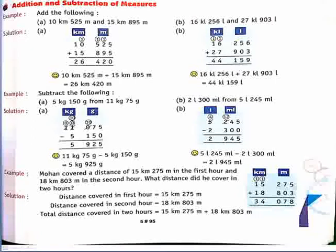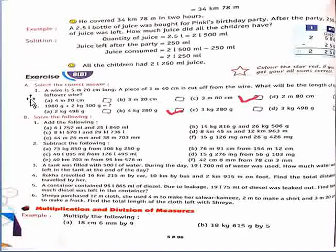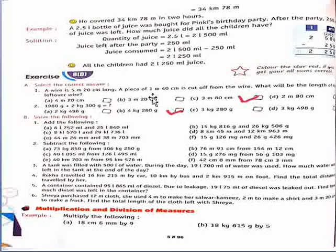Now start exercise 8.D, A part — select the correct answer. First question: A wire is 5 meter 20 cm long. A piece of 1 meter 40 cm is cut off from the wire. What will be the length of the leftover wire? In this question we do minus. Inhe arrange karenge meter and centimeter ki column form mein. 20 mein se 40 minus karenge — 1 borrow kar lenge, so hamare paas 80 aajayega. Aage 4 mein se 1 minus kiya — 3 meter. So our answer is 3 meter 80 cm, C option is correct.